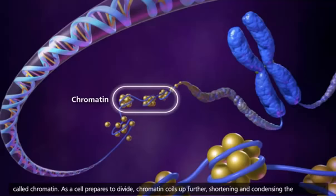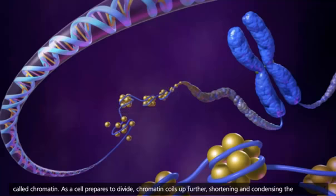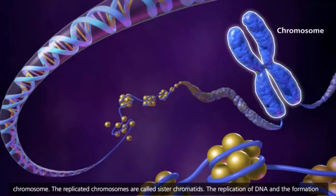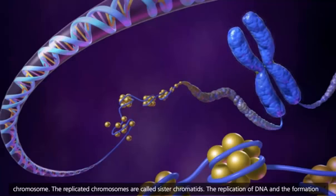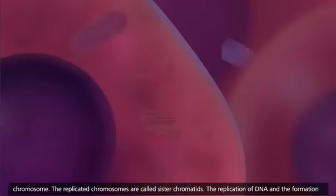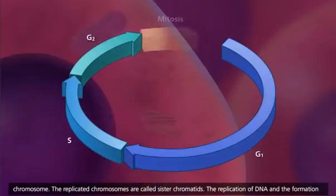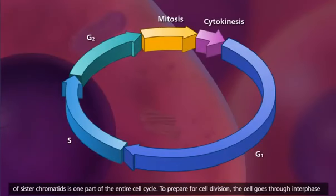As a cell prepares to divide, chromatin coils up further, shortening and condensing the chromosome. The replicated chromosomes are called sister chromatids. The replication of DNA and the formation of sister chromatids is one part of the entire cell cycle.